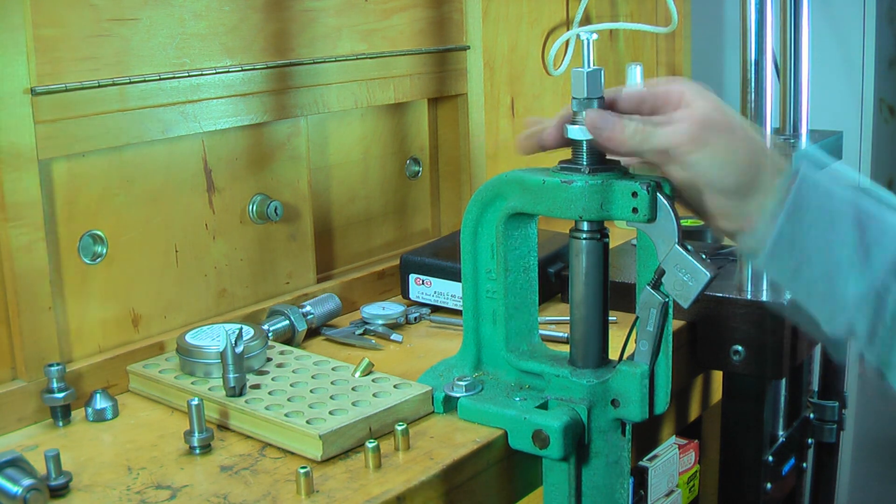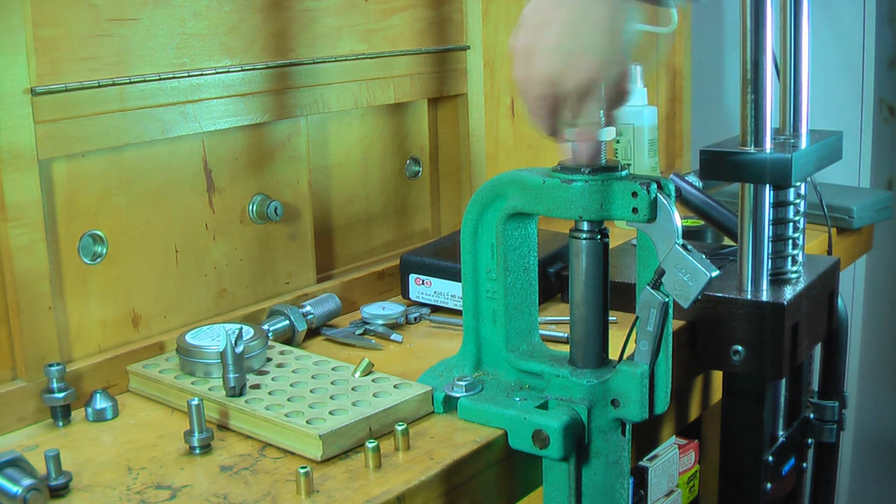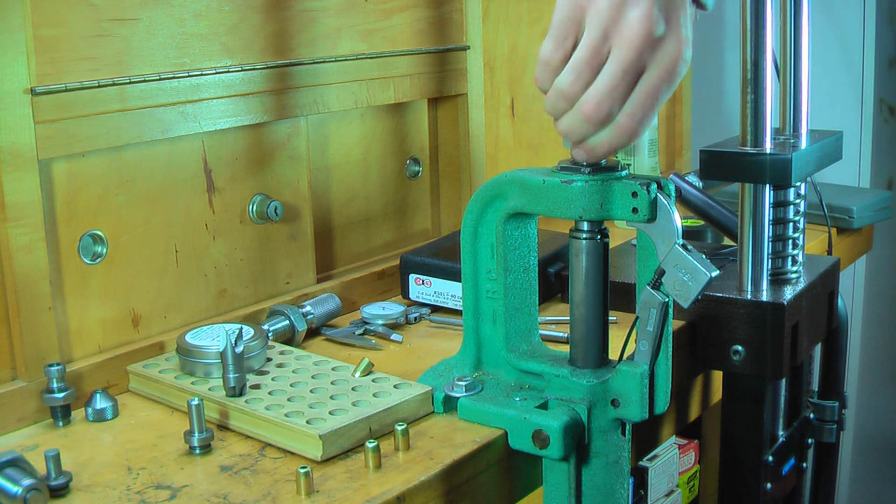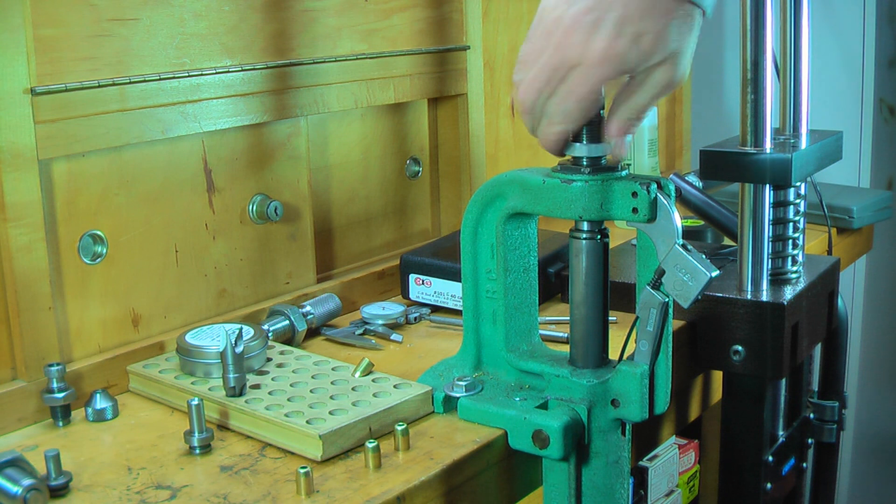Alright. Now once we have it set, we're going to move this collar all the way down because the jackets are an exact length, we want to make sure they have the exact amount of flare on the mouth in order to accept the core.